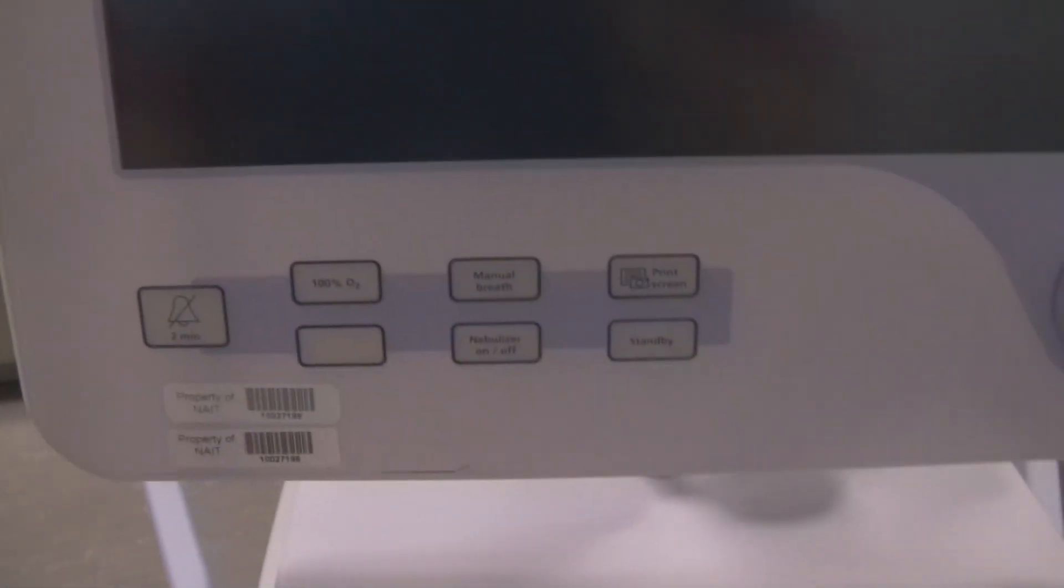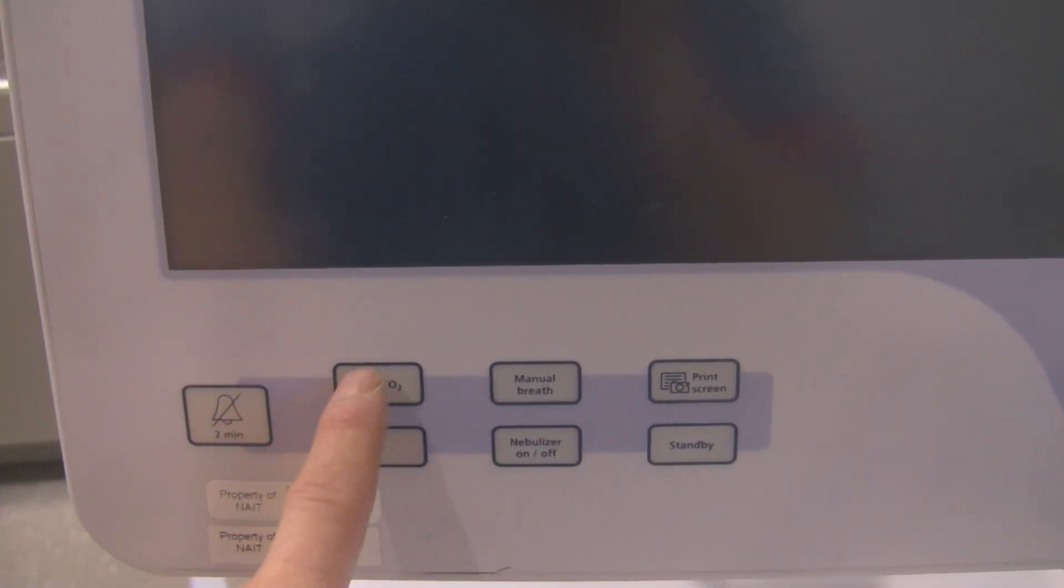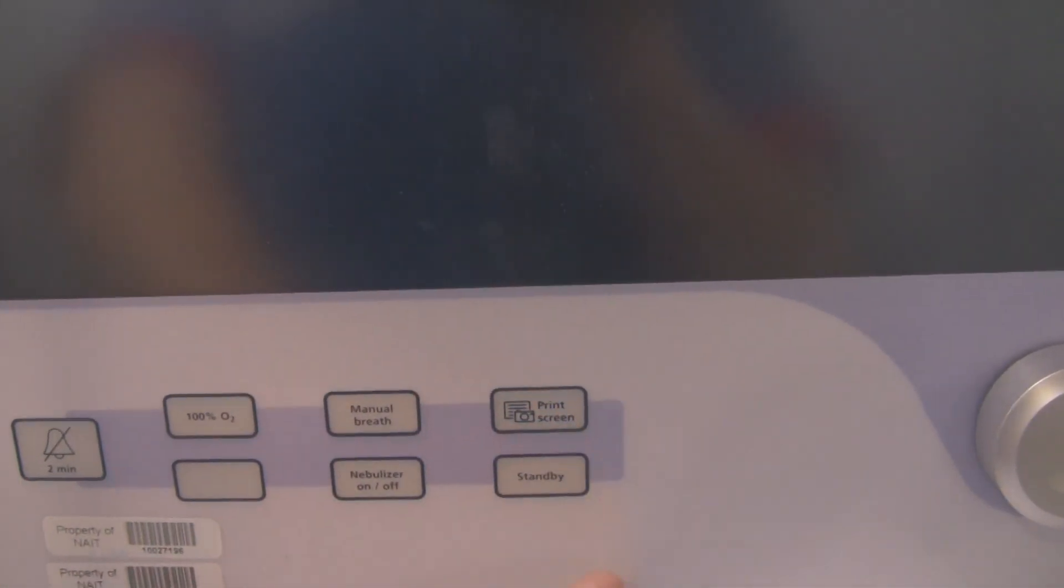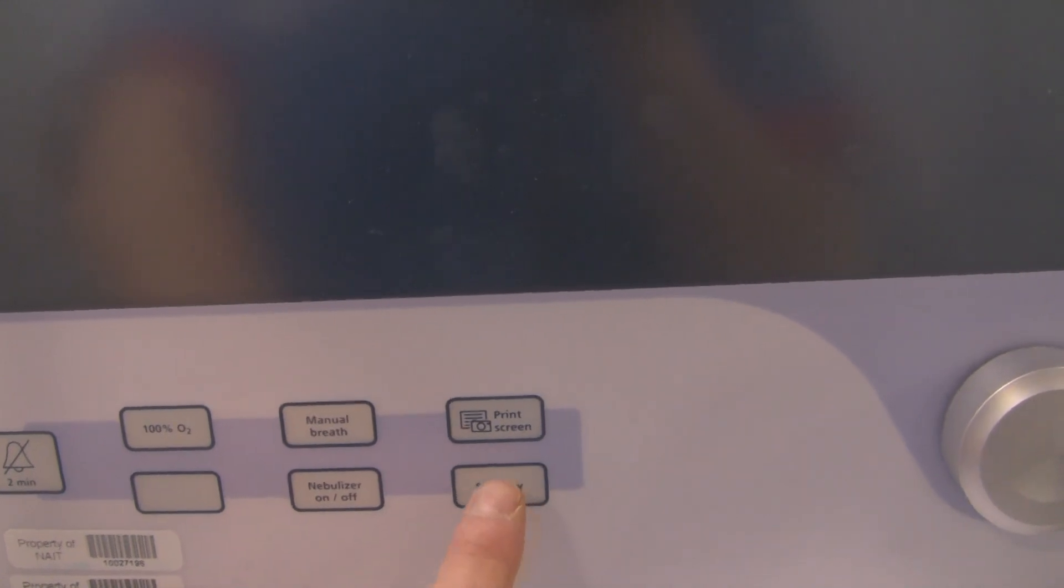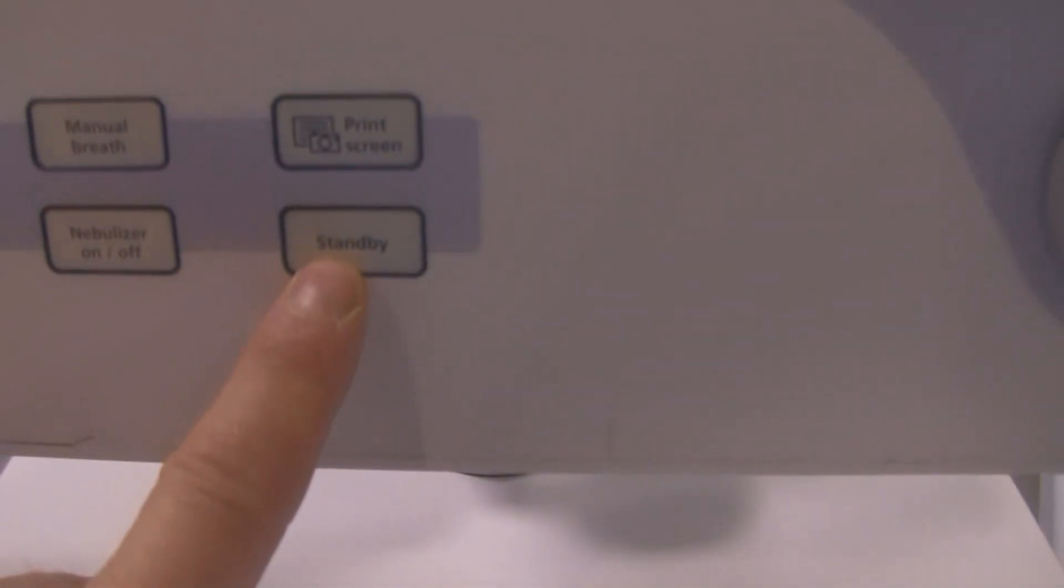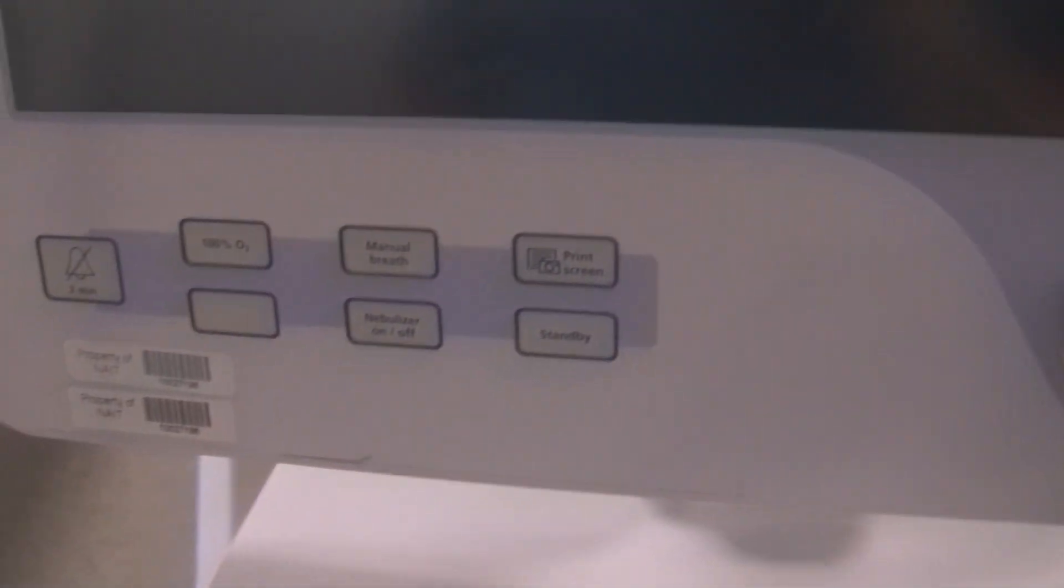There's a couple of soft keys over here that you can also press: alarm silence, 100% oxygen, manual breath, nebulizer, print screen function, and of course if you want to put the ventilator into standby you touch this to put the ventilator into standby and then accept it as well.